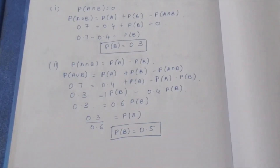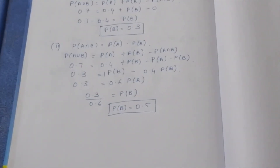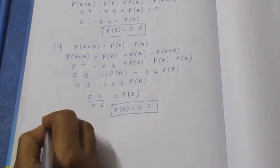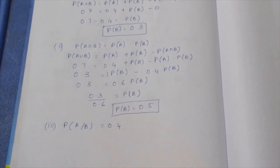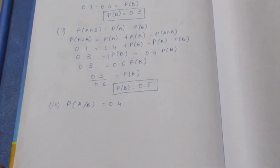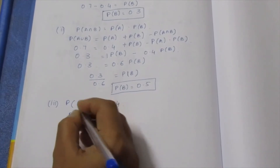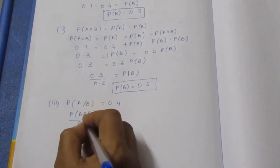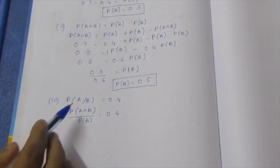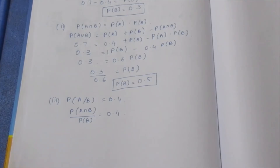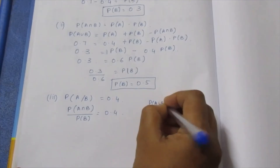P(B) = 0.3 ÷ 0.6 = 1/2 = 0.5. Now third subdivision: P(A∩B) equal to 0.4 and P(A) = 0.4, find P(B).